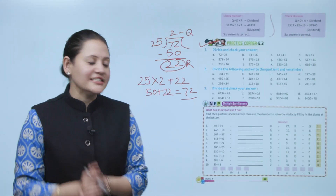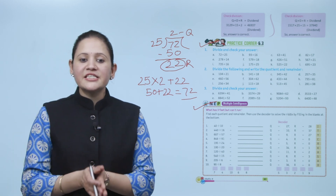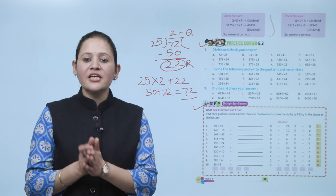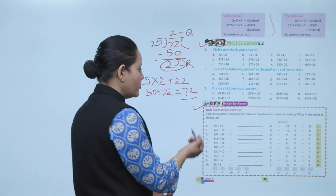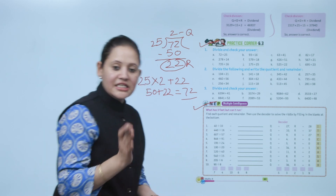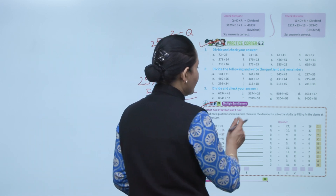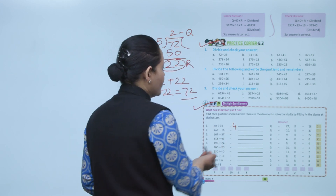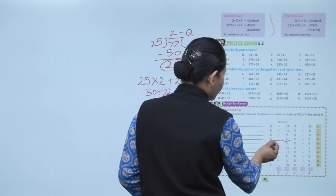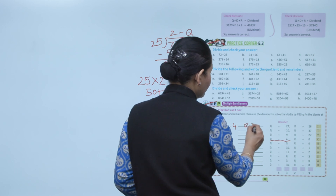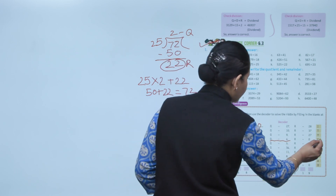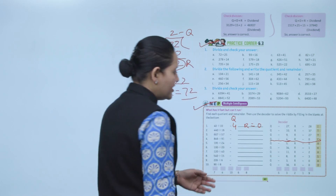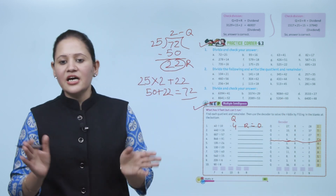Next is multiple intelligence. The riddle: what has 3 feet but can't run? Find each quotient and remainder, then use the order to solve the riddle by filling in the blanks. For example, 40 divided by 10 equals 4 with remainder 0, and the first letter is C. Divide the numbers, find the quotient and remainder, decode the answer, and find the solution to the riddle.